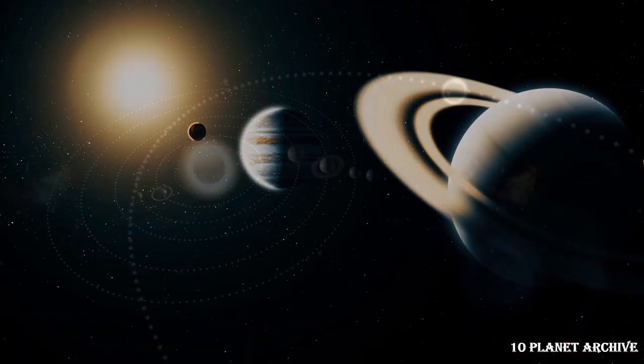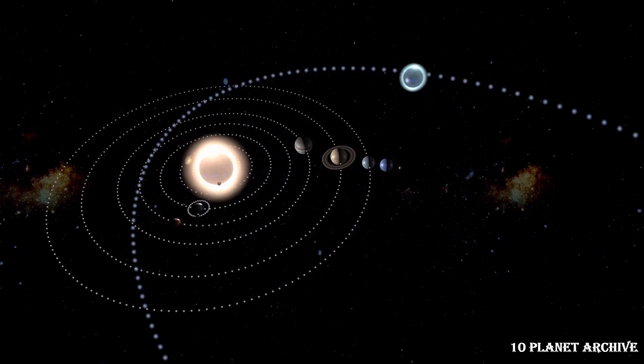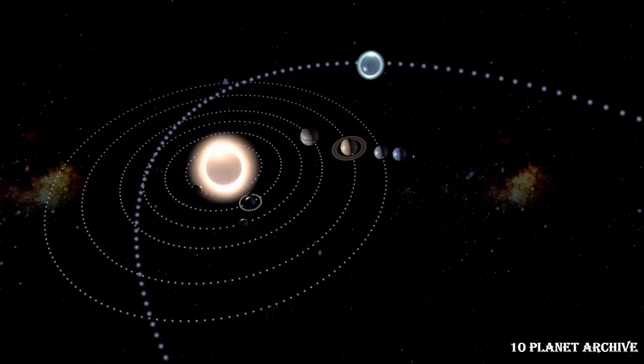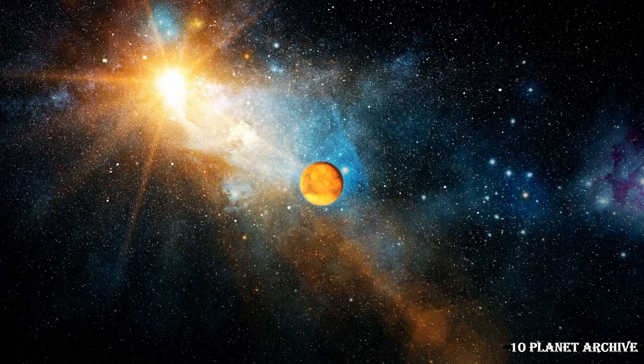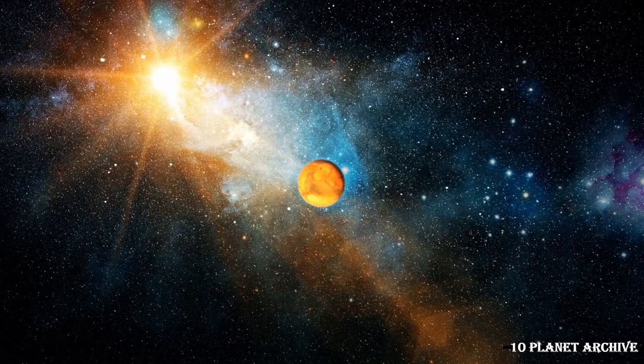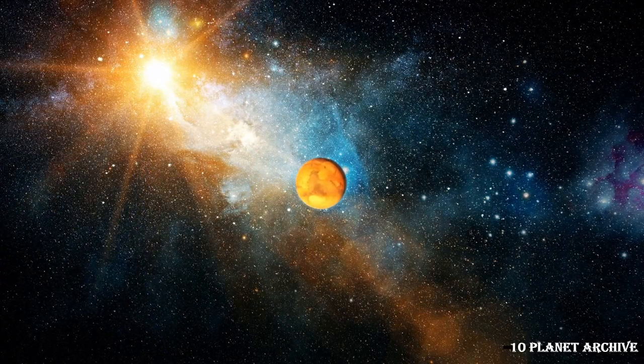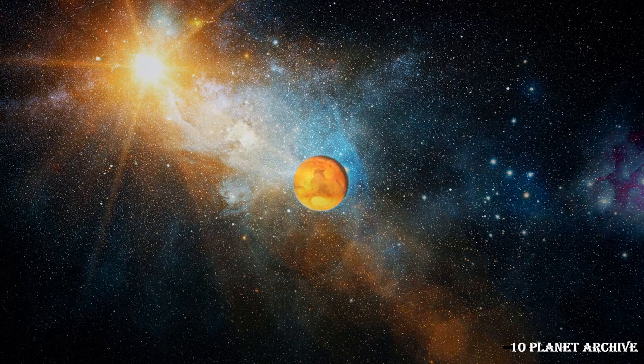Pluto's orbit around the Sun is unusual compared to the planets. It's both elliptical and tilted. Pluto's 248-year-long oval-shaped orbit can take it as far as 49.3 astronomical units from the Sun, and as close as 30 AU.